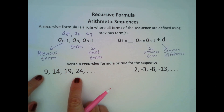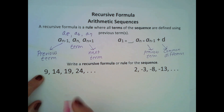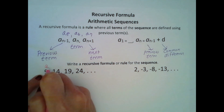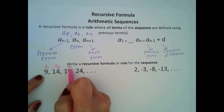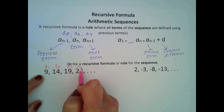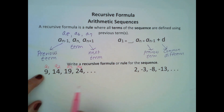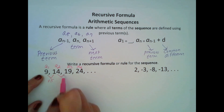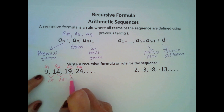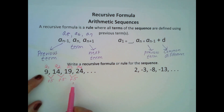Let's look at this example. I'm going to label my terms: a sub 1, a sub 2, a sub 3, and a sub 4. I first need to find what is my common difference. From 9 to 14, I added 5. From 14 to 19, I added 5. From 19 to 24, I added 5. So 5 is my common difference.